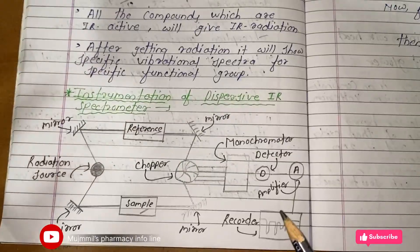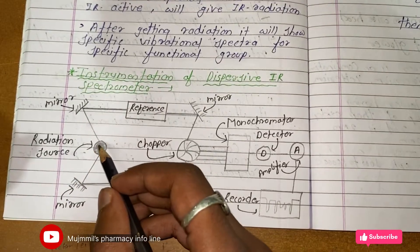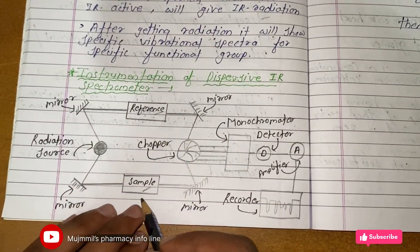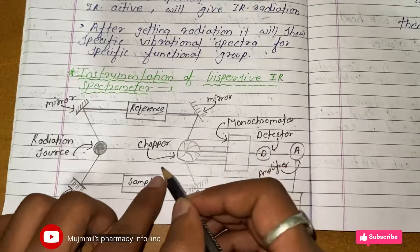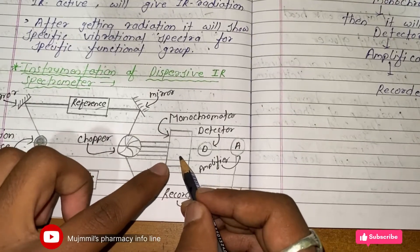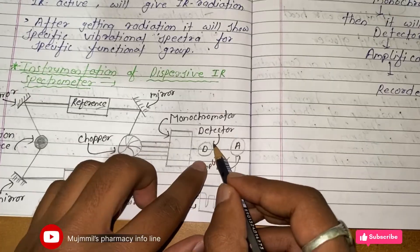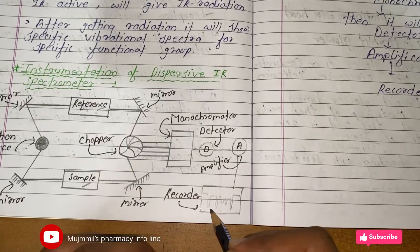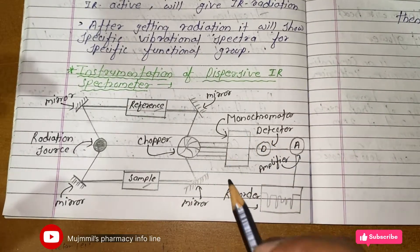Let's see the instrumentation of dispersive IR spectroscopy. From the radiation source, the light beam goes to two mirrors and is reflected into two beams — one beam goes to the reference and the second beam goes to the sample. These beams reflect from mirrors and go to the chopper, then to the monochromator, where polychromatic light is converted into monochromatic light. From there it goes to the detector, where light energy is converted into electrical signals. The signals are amplified and the final response is recorded.